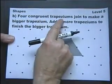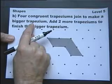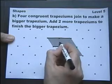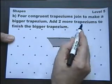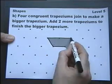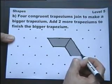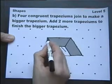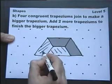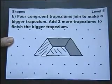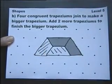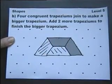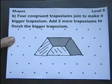Four congruent trapeziums join to make a bigger trapezium. Now what's a trapezium? A trapezium is a four-sided shape, in other words a quadrilateral with a pair of parallel sides. Add two more trapeziums to finish the bigger trapezium. So there's one trapezium already drawn, there's another one. Where should I draw another two? Well I reckon if I draw one in there and I draw one in there, that will solve the puzzle. Four congruent trapeziums join to make a bigger trapezium.